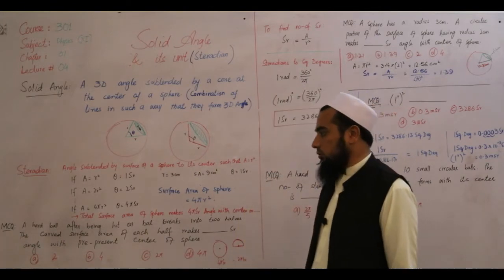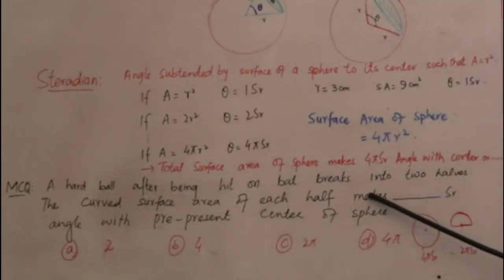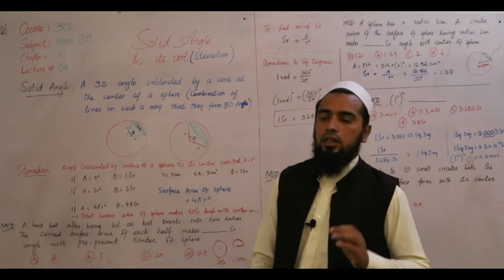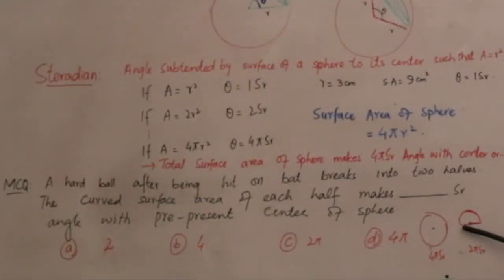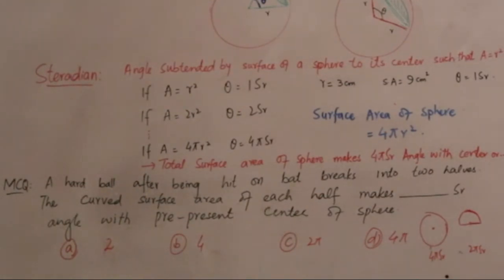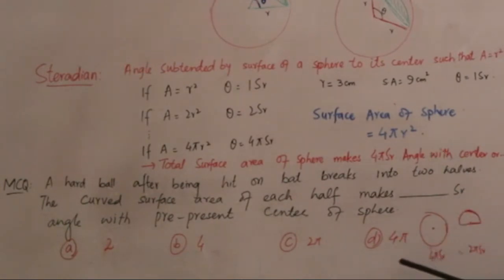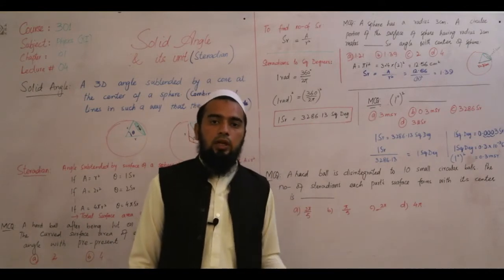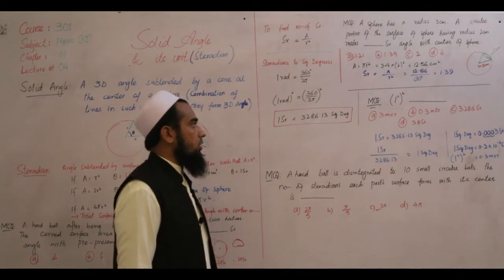اس پر ایک question دیکھیں: ایک sphere کو دو حصوں میں تقسیم کیا — اب یہ آدھا circular area center کے ساتھ کتنا angle بنا رہا ہے؟ جب پورا sphere تھا تو وہ بنا رہا تھا 4π steradian. اب جب آدھا sphere ہوگا تو: 4π ÷ 2 = 2π. This is the correct option. اسی طرح اگر چار ٹکڑوں میں تقسیم کریں تو 4π ÷ 4، چھ میں تو 4π ÷ 6.